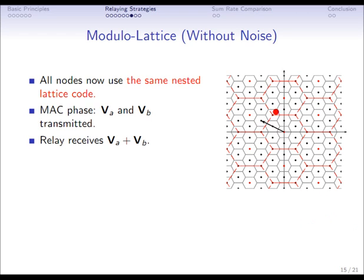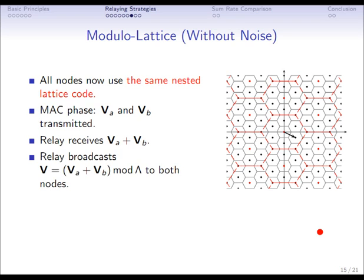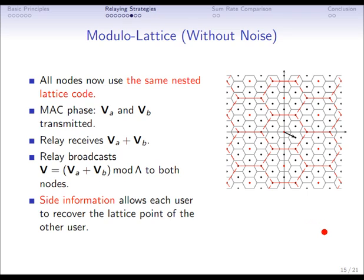This received point may be outside the Voronoi region of the shaping or coarse lattice. We then apply a modular operation, which folds the lattice point back to the innermost Voronoi region — the fundamental region. This is now a codeword again. In the broadcast phase, since there is no noise, the two users see this point and apply the side information principle: because they know what they sent in the first phase, they can extract the respective lattice point of the other user.